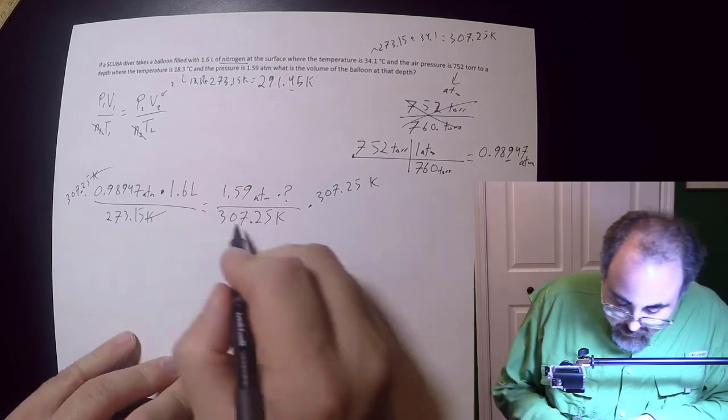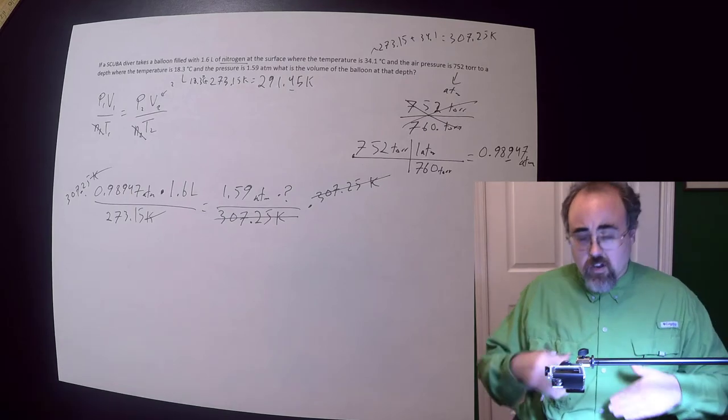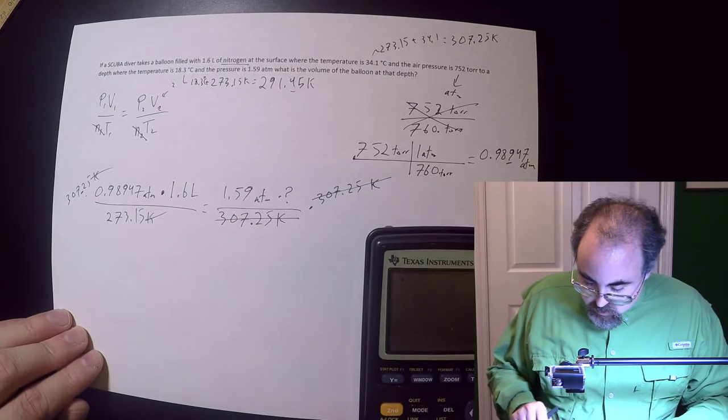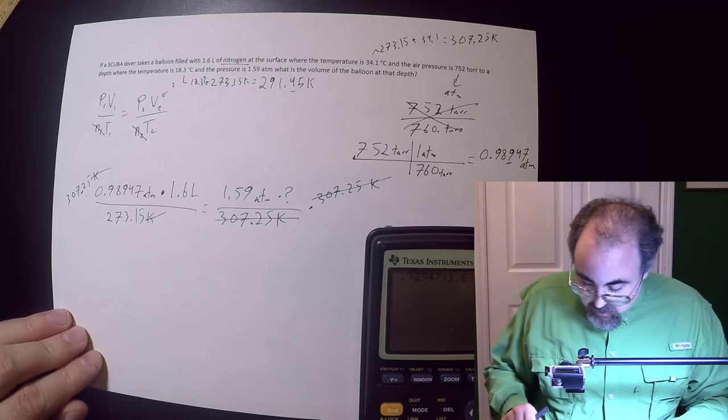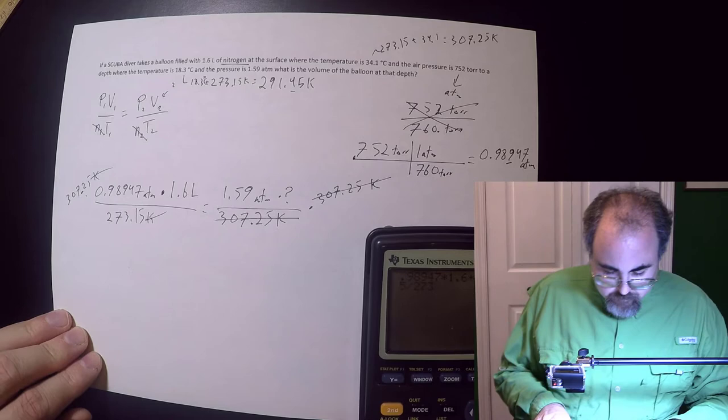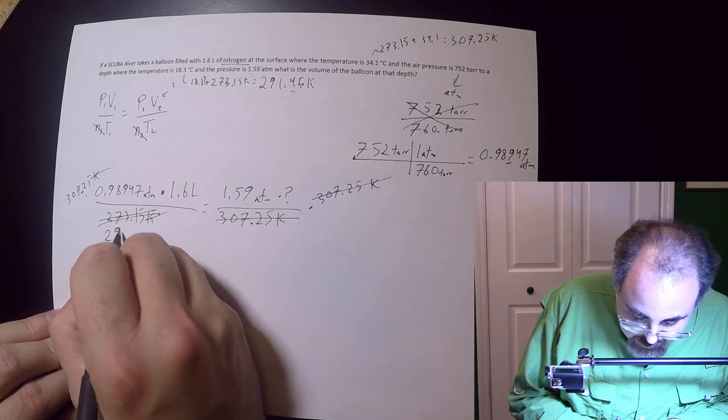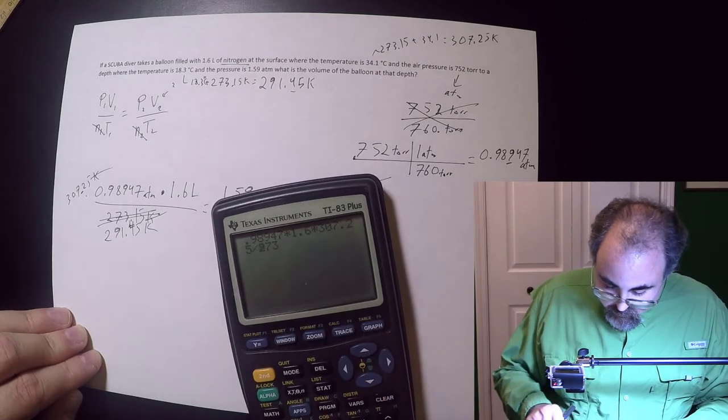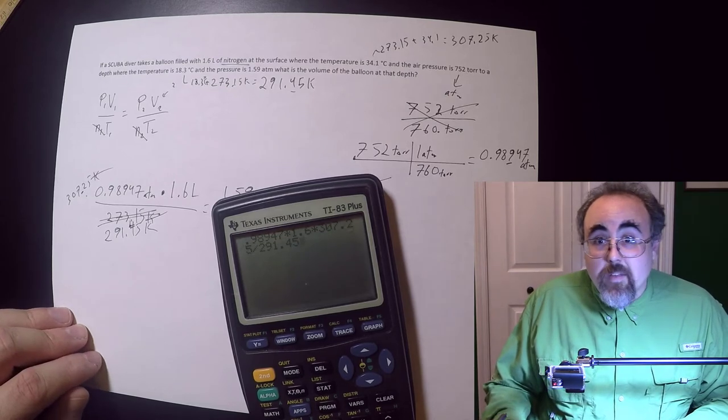At which point, the kelvin is cancelled there. That whole bottom part cancels there. And then I'm just going to do this and then I'll come back. I'm going to do this in two steps just to make my life easier. So I'm going to take 0.98947 times 1.6 times 307.25 divided by... Why did I put that there? That is not the right number at all. I'm looking for 291.45.